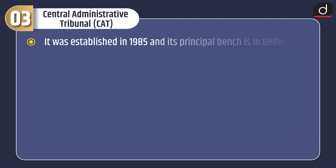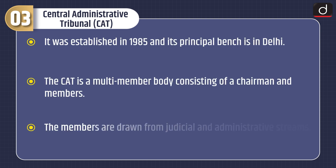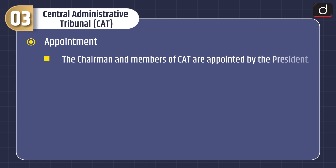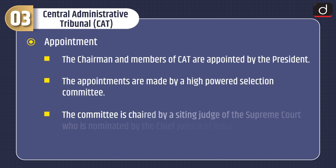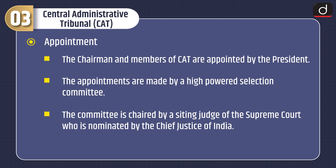Now let's discuss about Central Administrative Tribunal or CAT. It was established in 1985 and its principal bench is in Delhi. The CAT is a multi-member body consisting of a chairman and members; the members are drawn from judicial and administrative streams. The chairman and members of CAT are appointed by the President. The appointments are made by a high-powered selection committee, chaired by a sitting judge of the Supreme Court who is nominated by the Chief Justice of India.